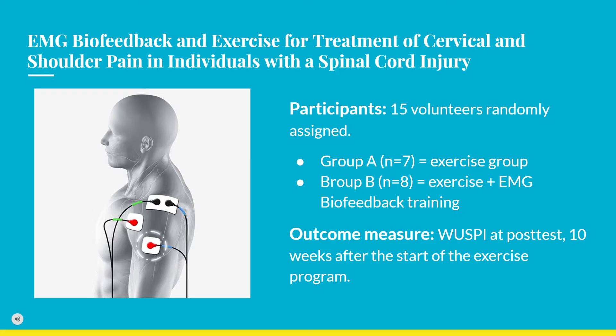After baseline testing, participants were randomly assigned to one of two groups: 7 to Group A (exercise only) and 8 to Group B (exercise plus EMG biofeedback). The primary outcome for both groups was reassessment using the Wheelchair User Shoulder Pain Index at 10 weeks after the start of the exercise program.